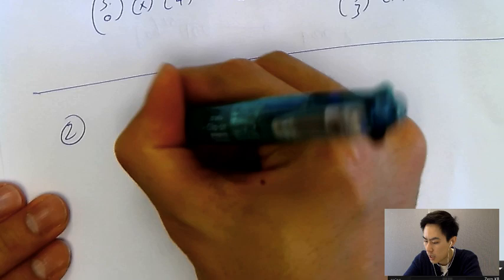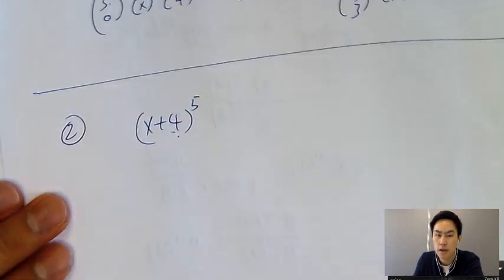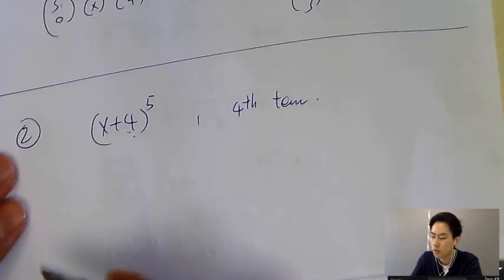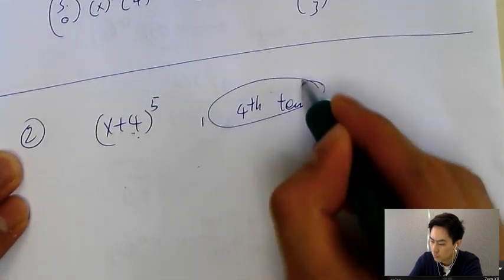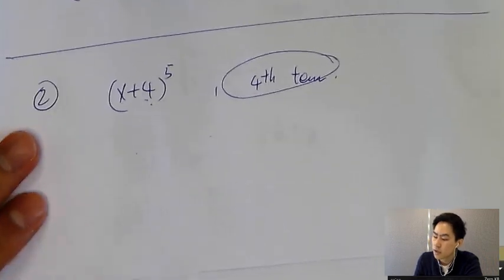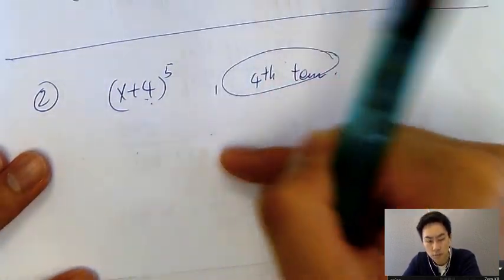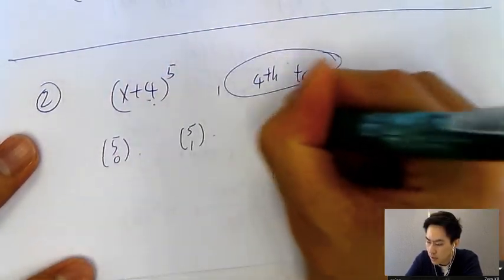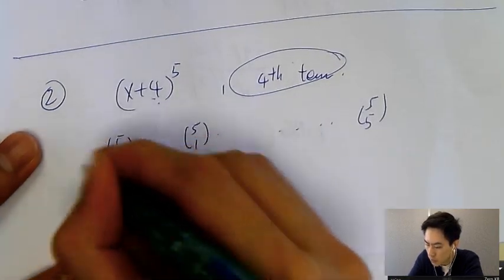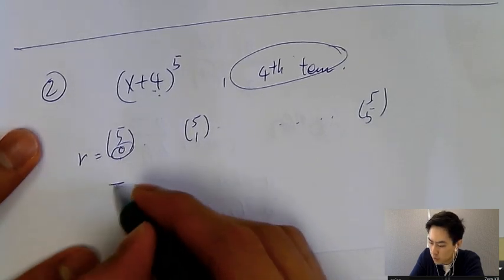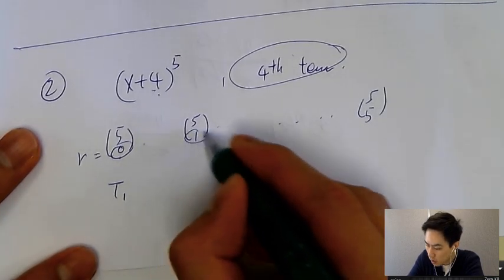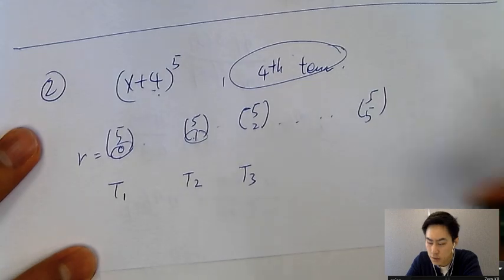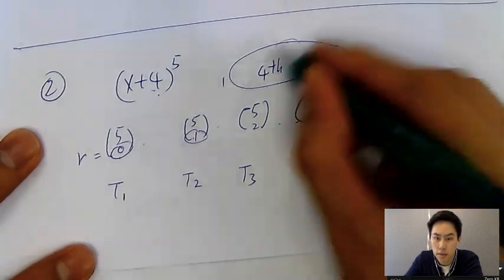Let's say this time (x+4)^5, if the question asks you to find the fourth term of the expansion, obviously you don't want to expand everything. There's one trick: I always set r starting from 0. If r equals 0, you have the first term. If r is 1, you have the second term. If r is 2, you have the third term. Finally, if r is 3, you have the fourth term.